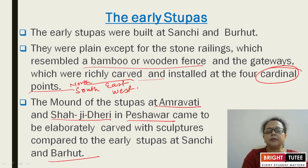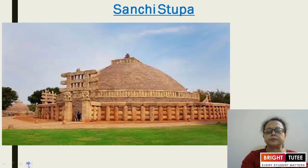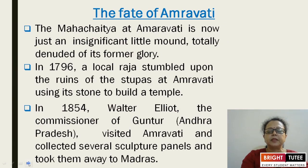One of the stupas constructed in Peshawar bears the name Shahji Dheri and is also quite different. There is no comparison between these and the stupas at Sanchi and Barhut. The Sanchi stupa is located in Madhya Pradesh.